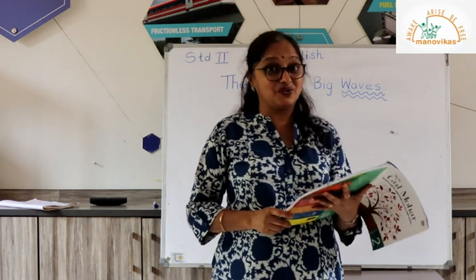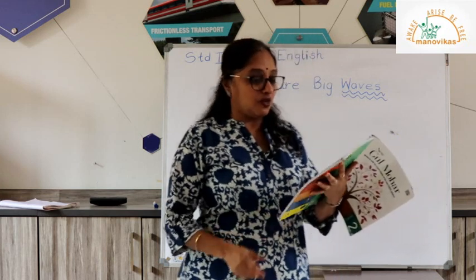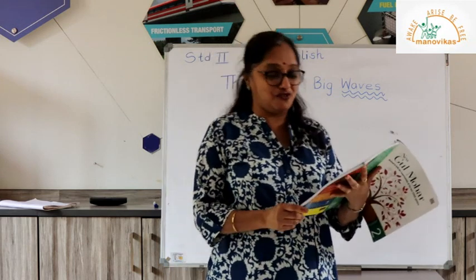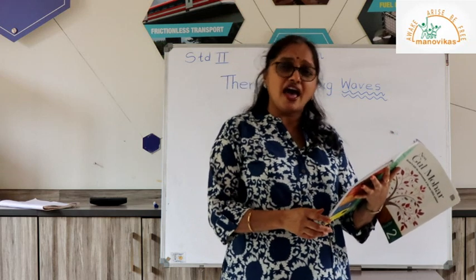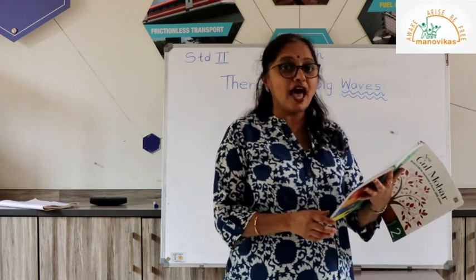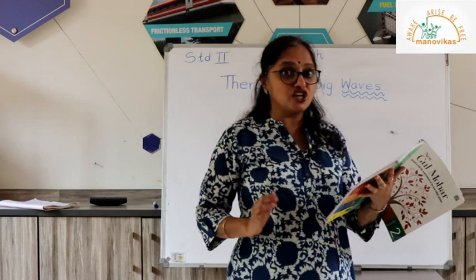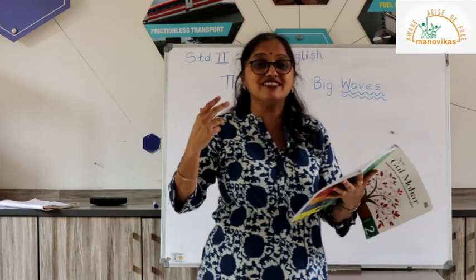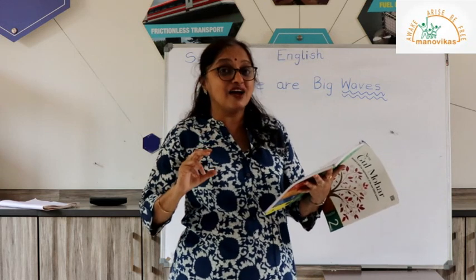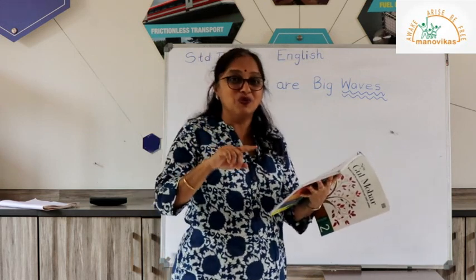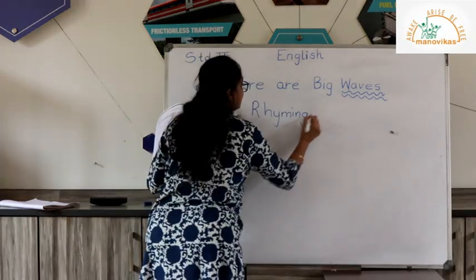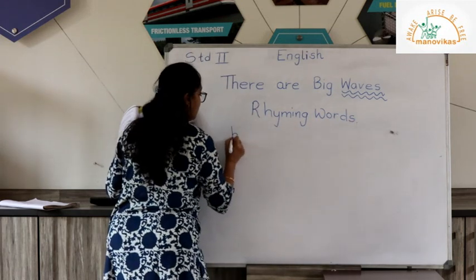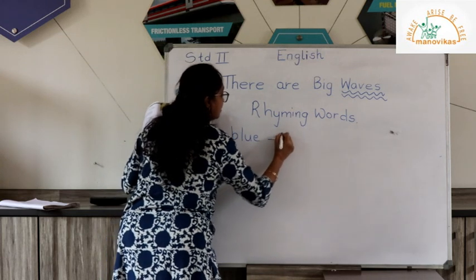So let's find out the rhyming words. I'll read the first four lines and we'll find the rhyming words from the first stanza. There are big waves and little waves, green waves and blue. Waves you can jump over, waves you can dive through. So which two words have the same ending sound? Yes - blue and through. Rhyming words: blue, through.